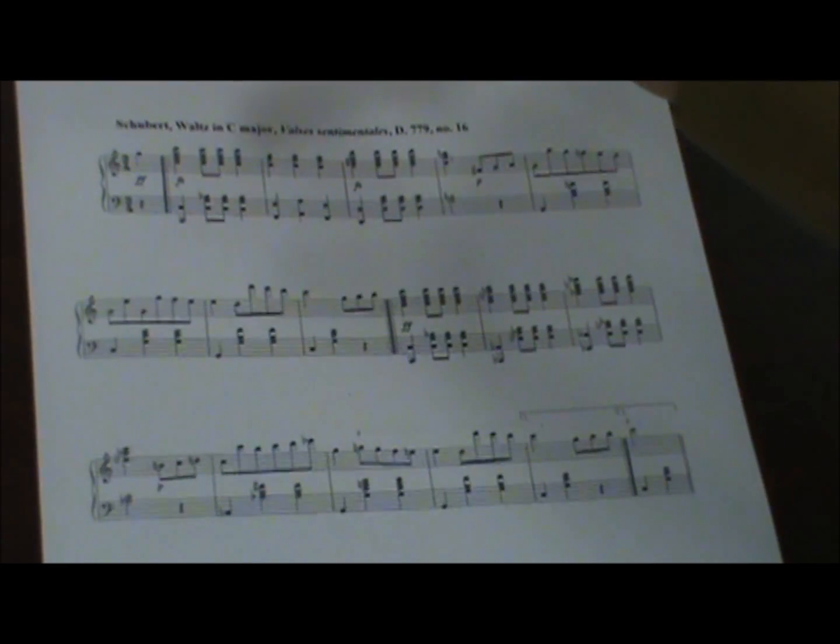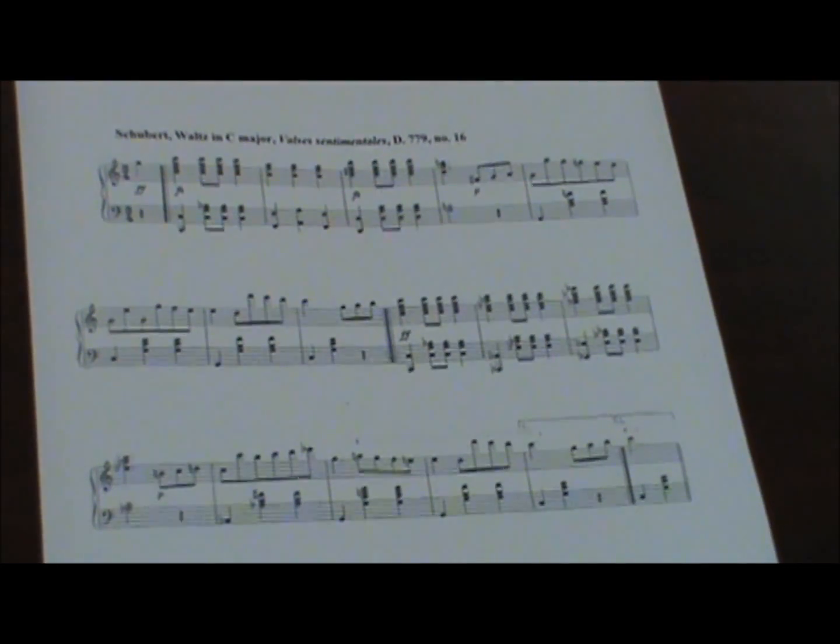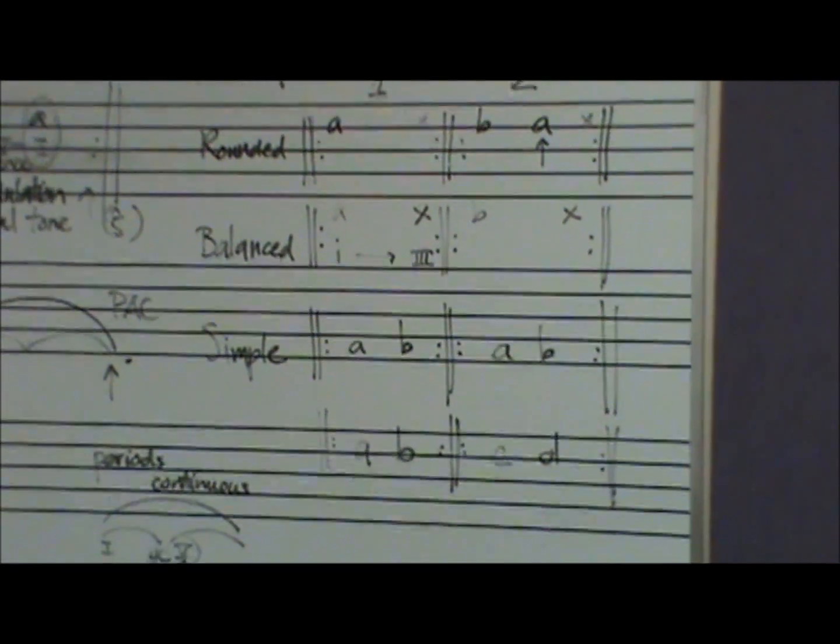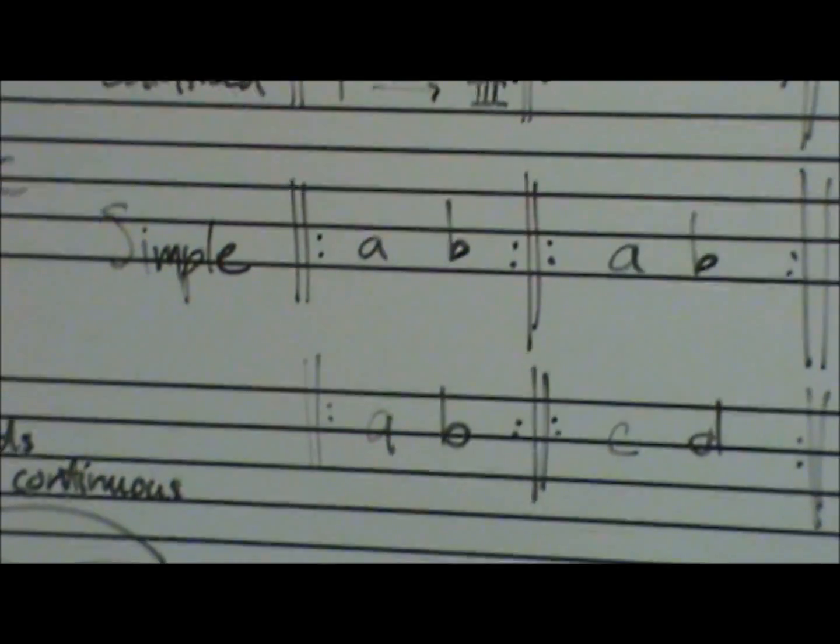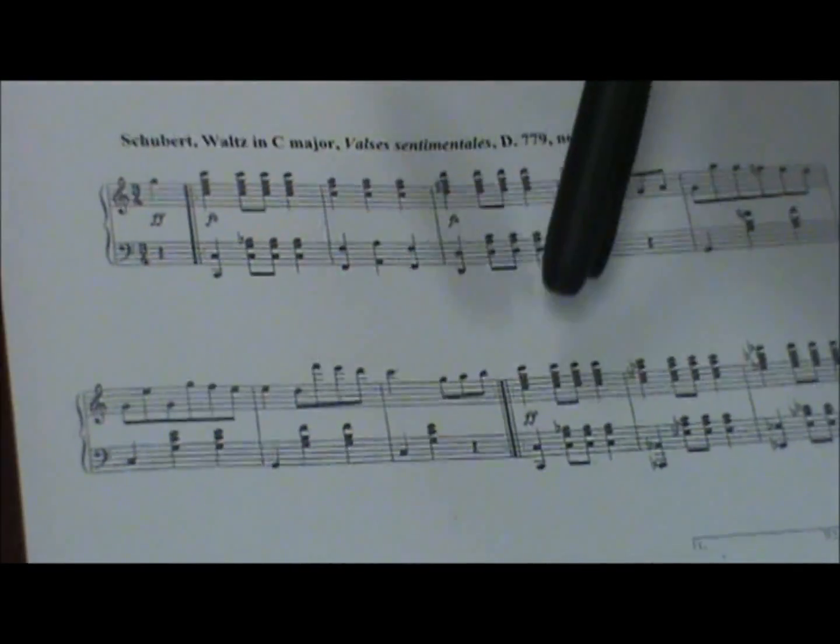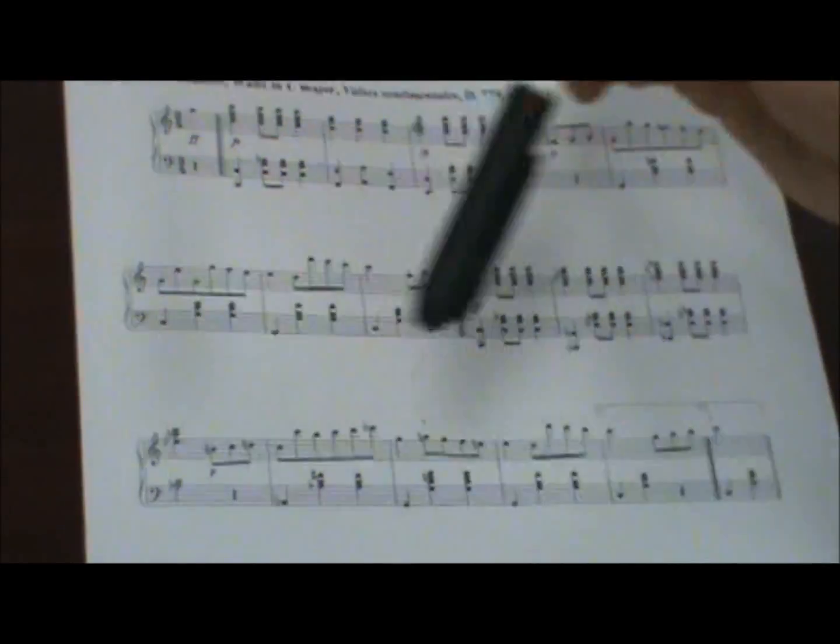So when you have, we talked about two schemes up there on the board for simple. One of them is all contrast, one of them is all similar. A-B-A-B. And that's what we get right here. So we get A material, we get B material, we get A material, we get B material.